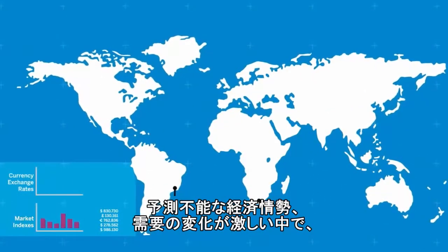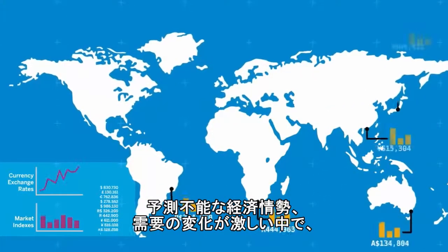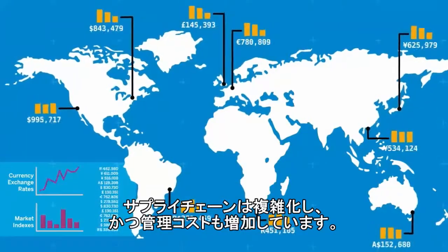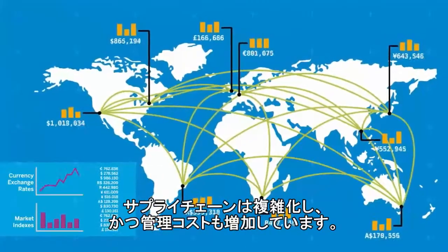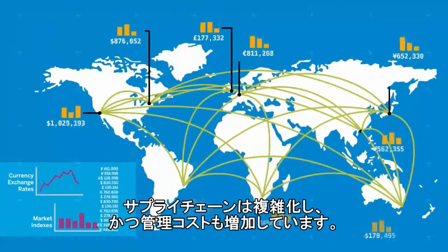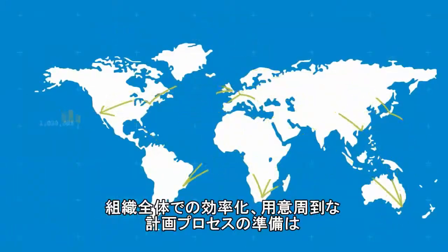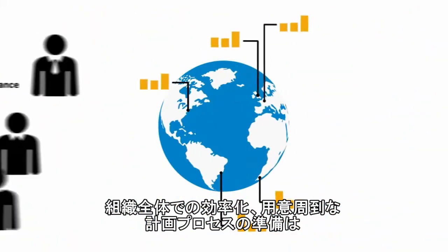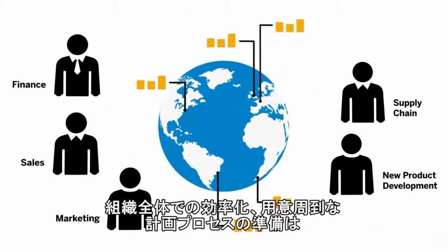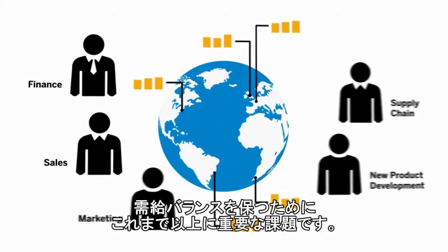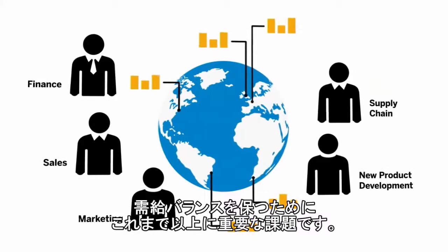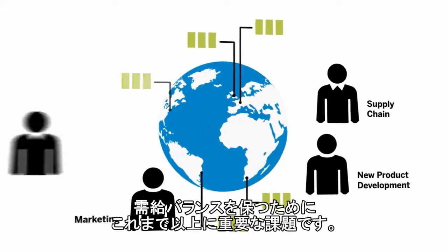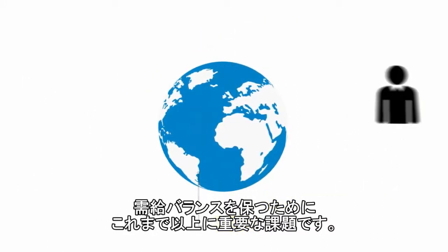In a world of unpredictable economic conditions, volatile demand, and supply chains that are complex and costly to manage, it's more important than ever to bring stakeholders across your organization together in an efficient, truly integrated planning process that helps you profitably align demand and supply.